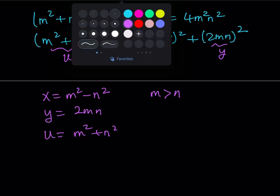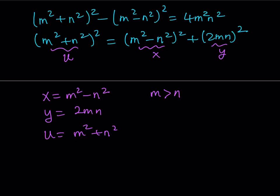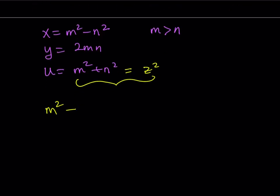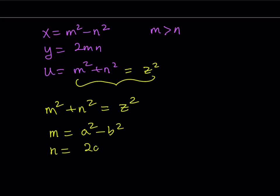Let's go ahead and find z. Remember, u is equal to z squared. So if you replace u with z squared, you get another Pythagorean theorem formula. Since this equation is satisfied for integers m and z, I can safely say there are integers a and b, with a greater than b, such that: m equals a squared minus b squared, n equals 2ab, and z equals a squared plus b squared.